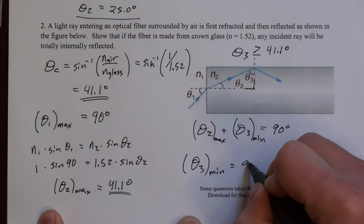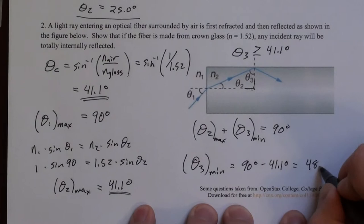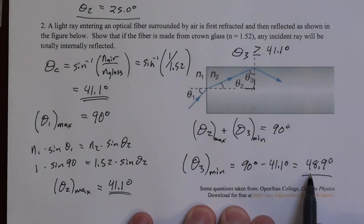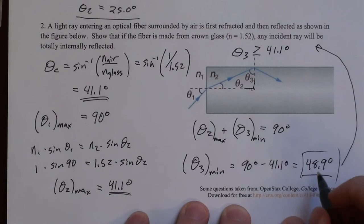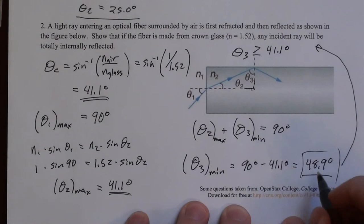So what we get for theta 3 minimum is 90 degrees minus 41.1 degrees, which is 48.9 degrees. So the minimum theta 3 we've just shown is 48.9 degrees, which is bigger than the critical angle. So we've shown that no matter what incident angle we have, if this is surrounded by air, the ray will be totally internally reflected.